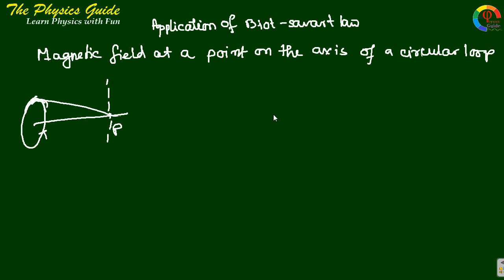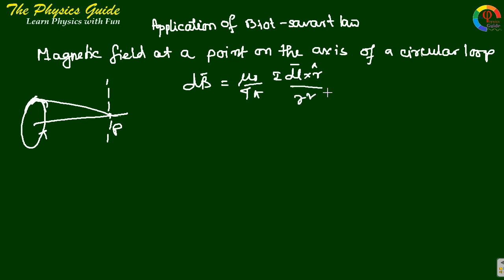We are going to solve for the magnetic field at a point on the axis of a circular current loop. Using Biot-Savart law, we know the magnetic field dB for a small element dL equals mu naught by 4 pi times I dL cross R-vector by R squared.